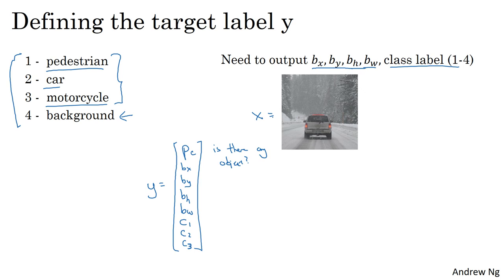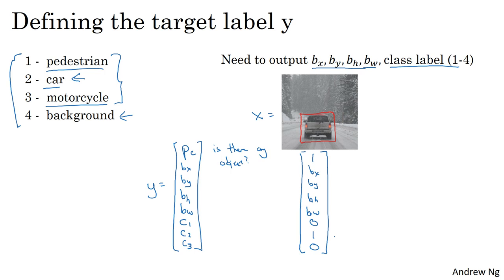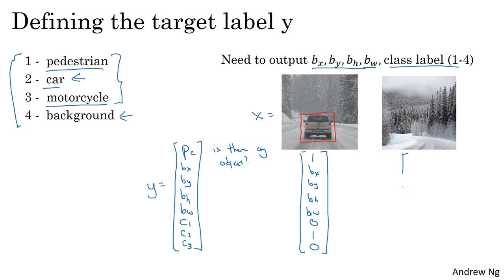If a training set image X contains a car, then y will have PC equal to 1 because there is an object; bx, by, bh, and bw will specify the bounding box — so your labeled training set will need bounding boxes in the labels. Since it's a car (class 2), C1 will be 0 (not a pedestrian), C2 will be 1 (it is a car), and C3 will be 0 (not a motorcycle). Among C1, C2, C3, at most one should equal 1. If there is no object in the image, then PC will equal 0, and the rest of the elements will be don't-cares, written as question marks.